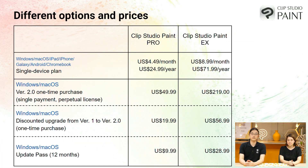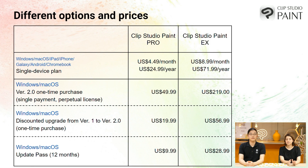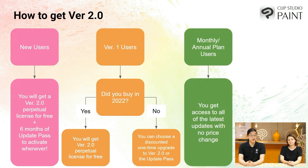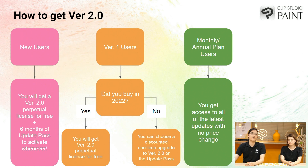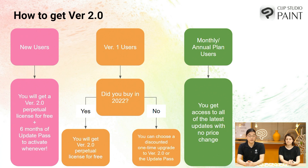We have also revealed the prices and options in the announcement. You will not need to upgrade to version 2.0 — you can continue to use version 1 on your computer and that will never change. We know there are a lot of options and they can be a bit confusing, so here we've broken down how to get version 2.0 and how the update pass will affect you. If you are a new user, you will get a version 2.0 perpetual license for free, which also includes six months of an update pass that you can activate whenever you want.